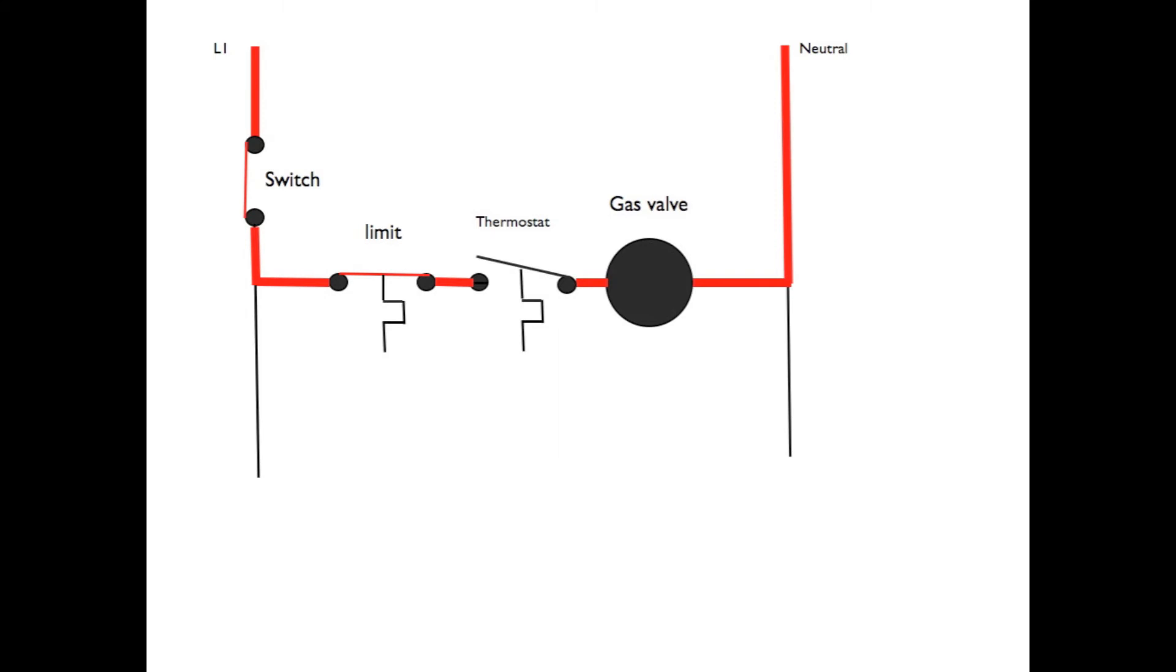Now we've closed the system switch, so power passes through the system switch through the limit, because the limit's normally closed, and the only thing that's keeping this thing from starting is the normally open thermostat.